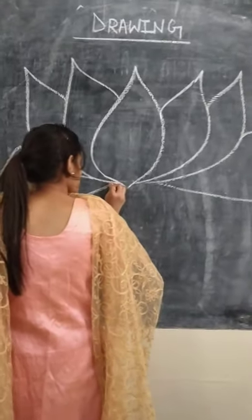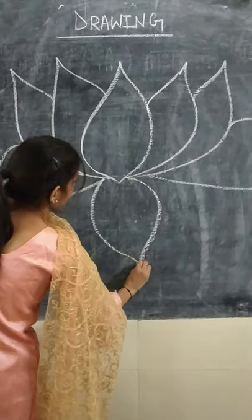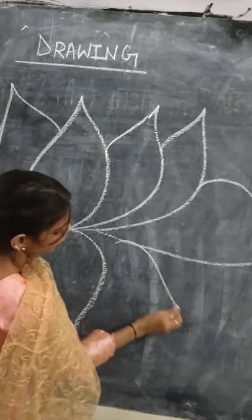Let me tell you. This way you can draw a lotus. Just look at this. This way will tell you Kamal's flower.